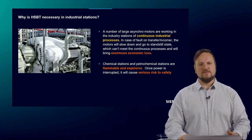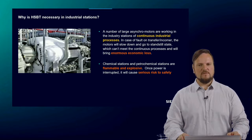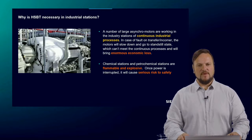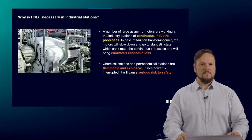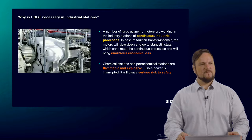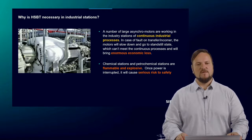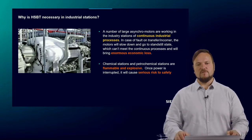Why is the HSBT necessary for industrial stations? In industrial stations, there are large numbers of asynchronous motors working continuously — for pumping, heating systems, and so on — requiring uninterrupted energy supply. In case of a fault in the incomer or transformer, motors on the motor bus will slow down and go to standstill, which means we can't meet continuous process requirements and face enormous economic losses. In petrochemical and chemical industries, there is also a serious risk of explosion of flammable environments — so not only economic loss, but also a serious safety risk.